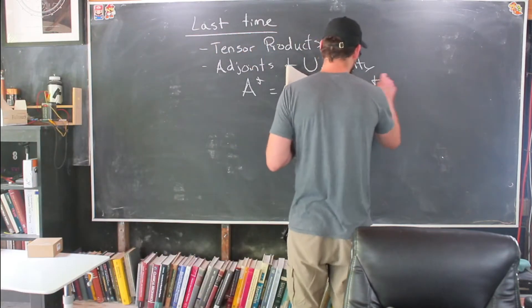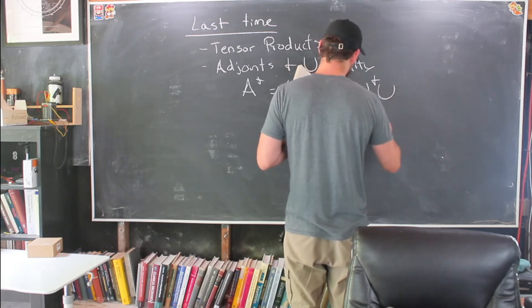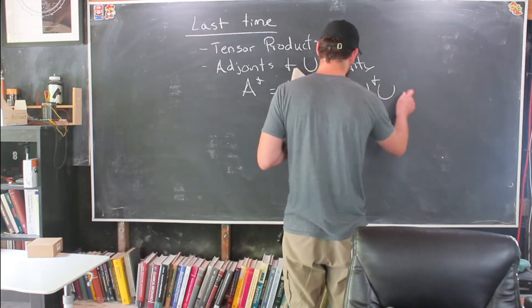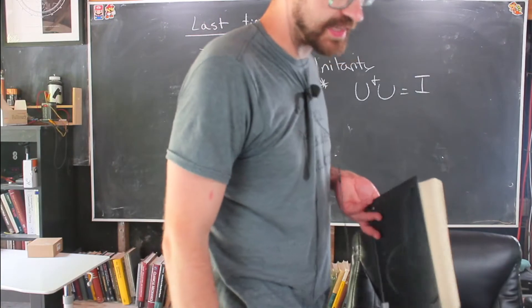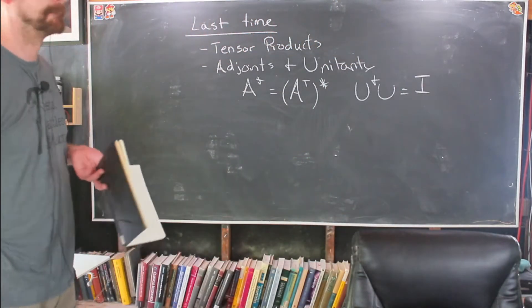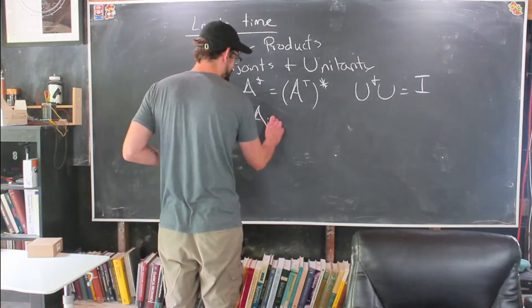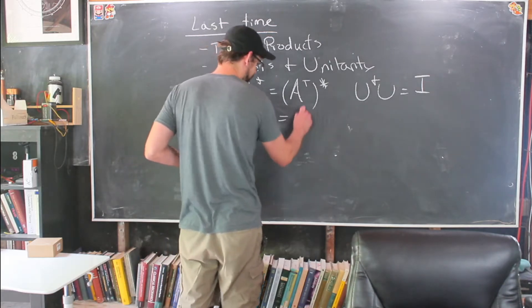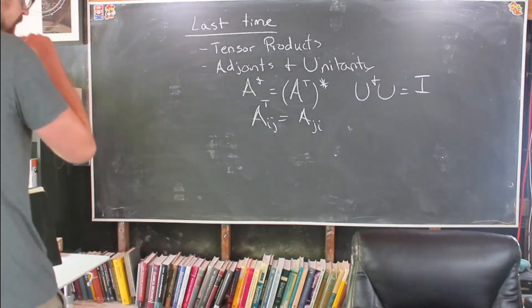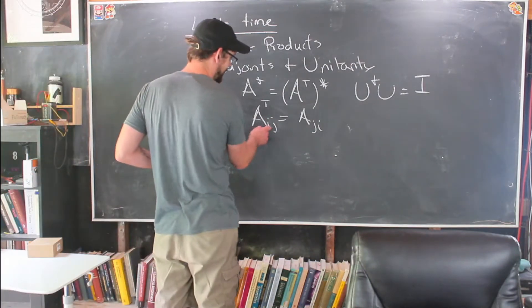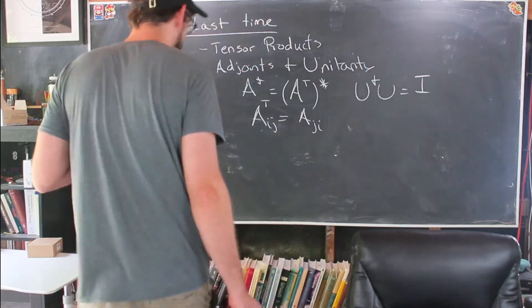That was how we talked about adjoint. And then lastly, unitarity. If you have a unitary matrix, then unitarity states that the adjoint of the unitary matrix with the unitary matrix itself is equal to the identity matrix. I'm not meaning orthogonal rotation. I mean like if you have an element ij, then the transpose takes ij and turns it to aji. The transpose takes the element of the matrix and flips the indices.